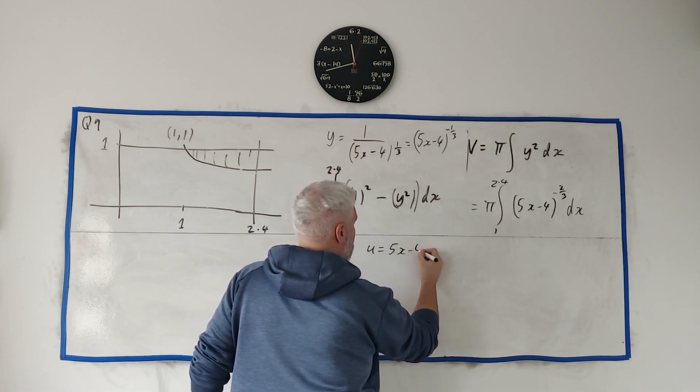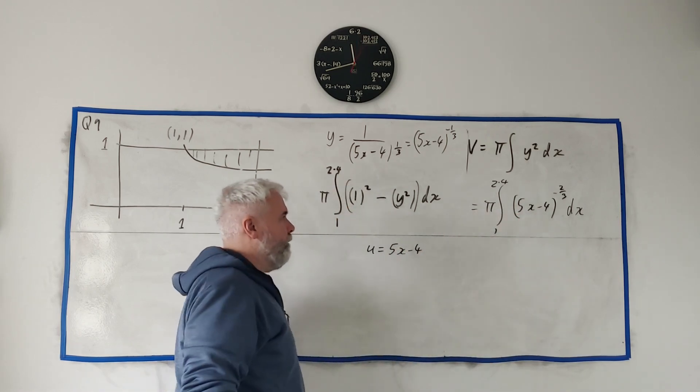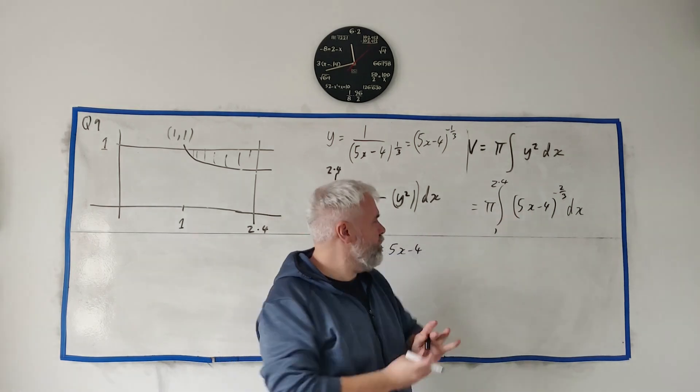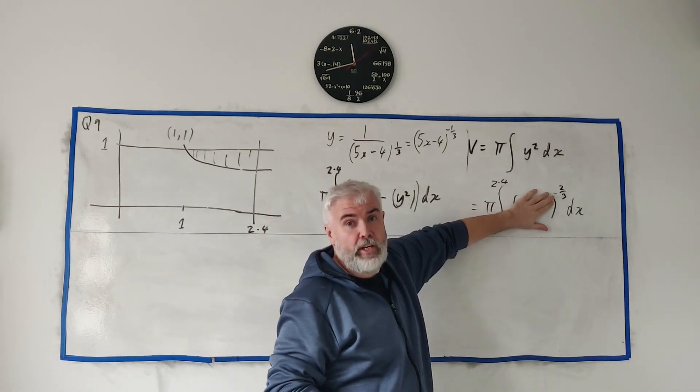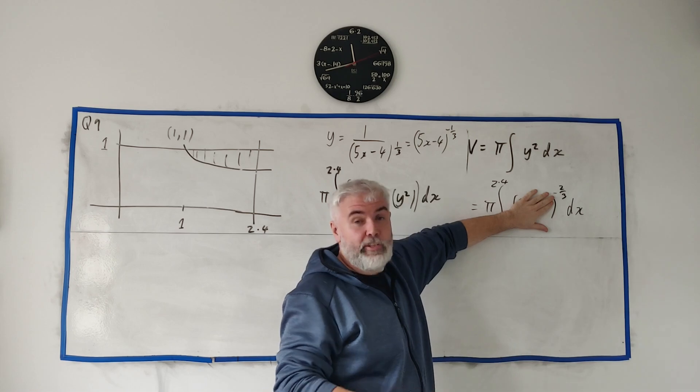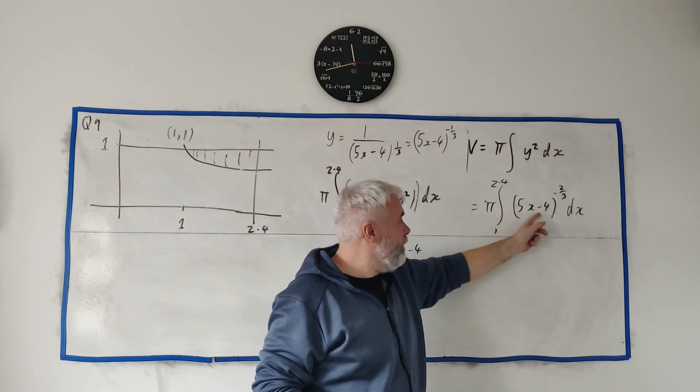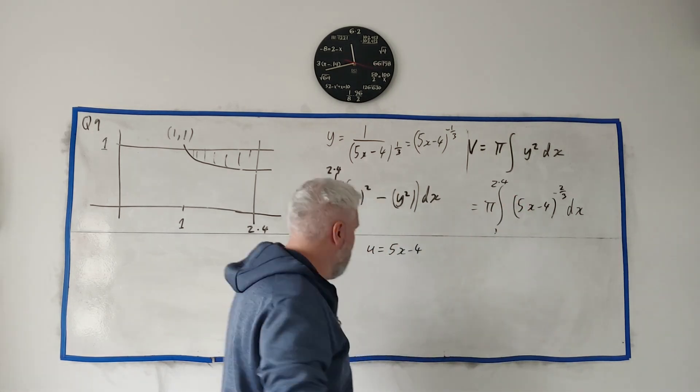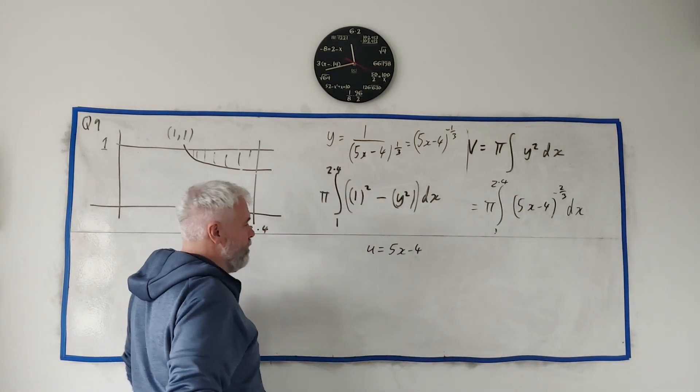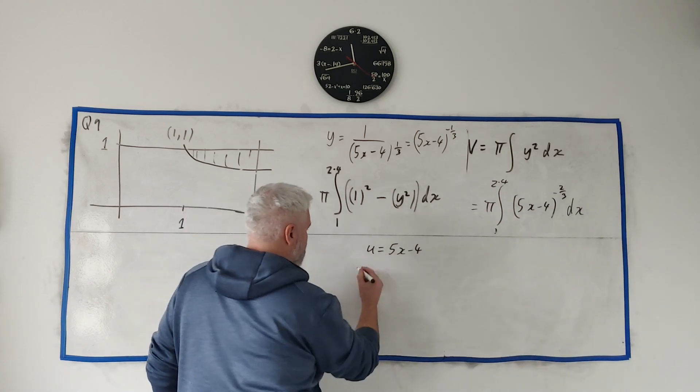And let's take u is equal to 5x minus 4. To integrate this in your head you just treat this like a simple object, integrate that, and then fix your cheat by dividing by the derivative of this, dividing by 5 basically, which we'll see the same in substitution.